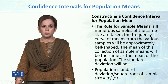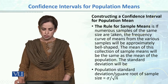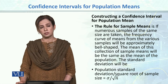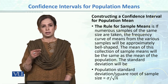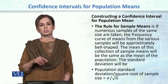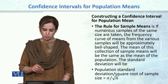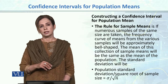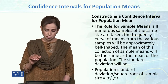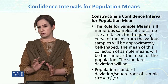Constructing a confidence interval for population mean — a rule for sample mean is: if numerous samples of the same size are taken, the frequency curve of the means from the various samples will be approximately bell-shaped. If we have a population with a sample drawn, the mean of each sample will be the same as the mean of the population. If we plot all the samples, the means will equal the population mean.